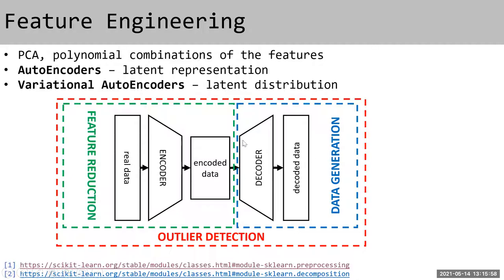The autoencoder can be used for feature reduction after training, and also for data generation from the latent distribution when using variational autoencoders. Additionally, since the autoencoder compares input and output, it can be used for outlier detection: if you input data that was not used during training, the decoded output should not look like the real data, flagging it as an outlier.